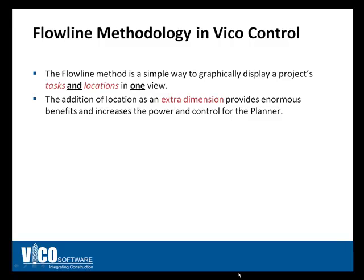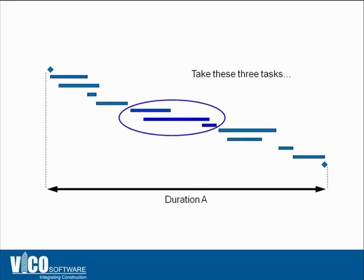Line of balance means the ability to graphically display tasks and locations in one simple view, as opposed to a purely activity-based schedule where locations are not represented automatically. Having locations added as an additional dimension provides a lot of benefit: it increases the planner's control, creates a deeper understanding of the relationship between tasks, and allows the planner to see what's going on at a glance rather than spending time investigating multiple pages of printouts.